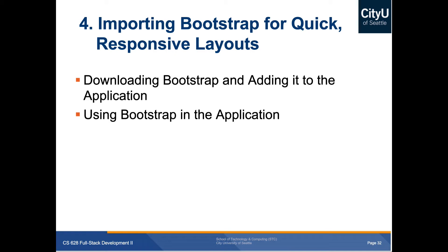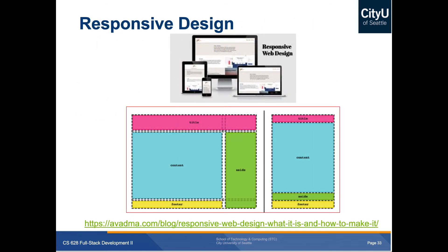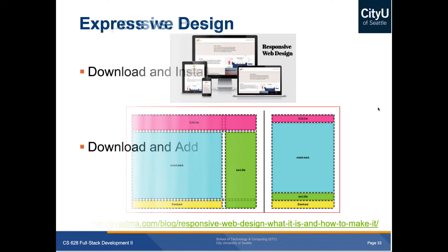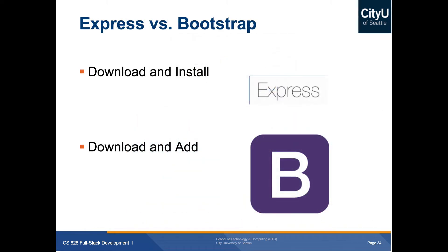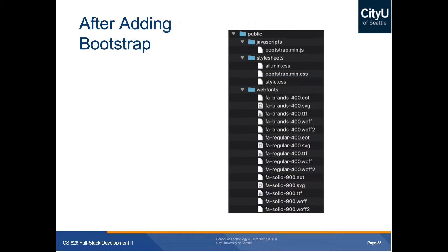Next, download Bootstrap and add it to the application. Responsive web design means that as you change screen size — from laptop to tablet to phone — the layout adapts so content is still visible and correct. If a page is not responsive and rendered on mobile, you might only see part of the title, part of the footer, and miss the side content. Download and add Bootstrap to your Express project, and after adding it you'll have access to its files for styling.